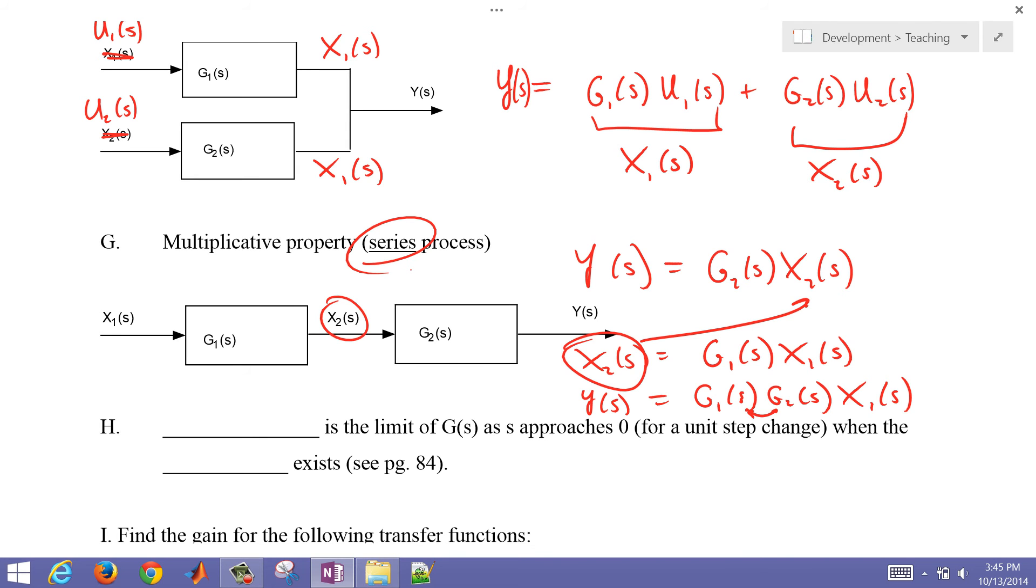We also know that if we have our transfer function g, if we plug in as s approaches 0, then that means that this is going to be the gain. So that's going to be the gain is the result of the limit of g as s approaches 0. And for an FOPDT model, that would be k sub p.